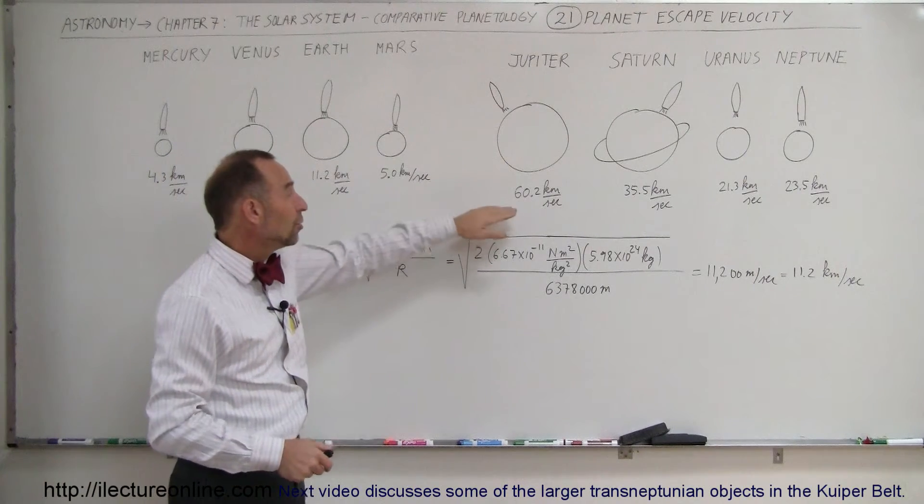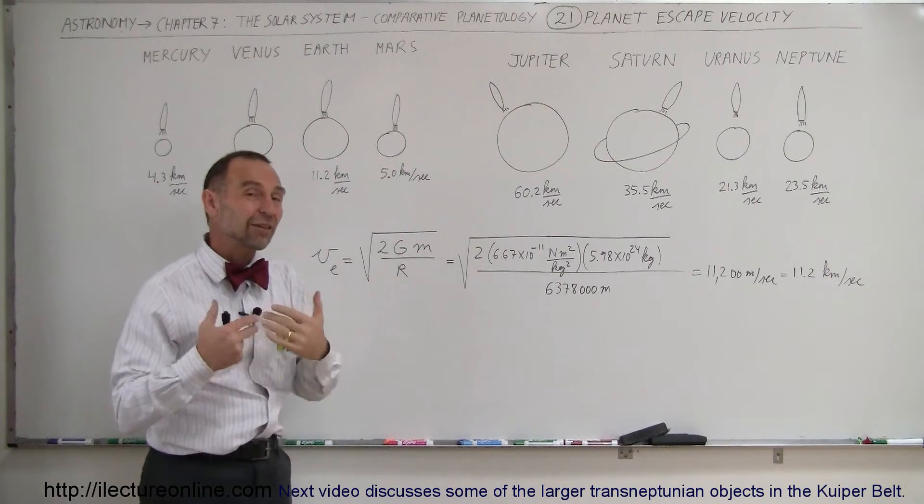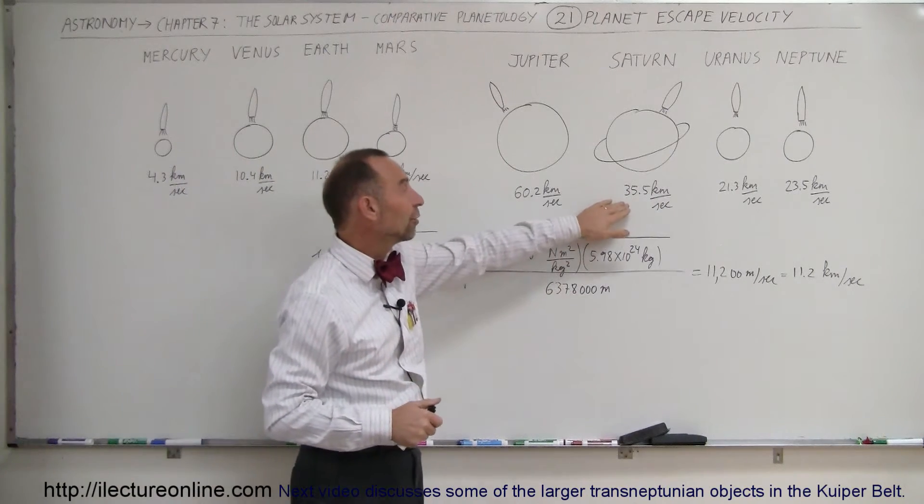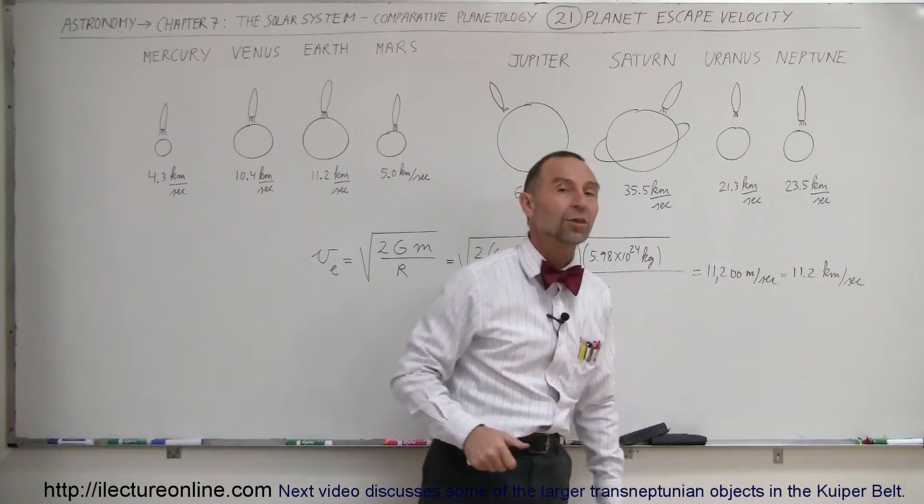But take a look at Jupiter. You have to have an escape speed of 60.2 kilometers per second. That's how fast you have to move to get away from Jupiter, or Jupiter will simply pull you back. For Saturn, it's 35.5. Uranus, 21.3. And Neptune, 23.5.